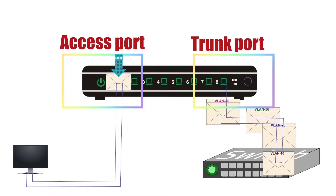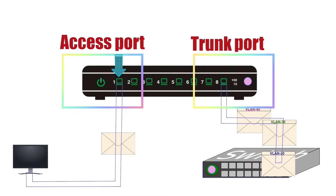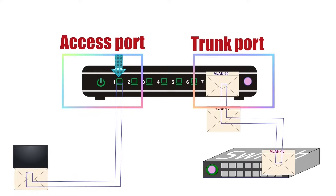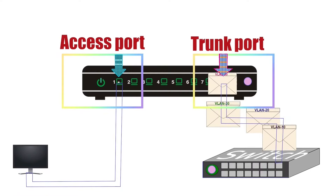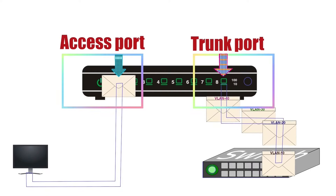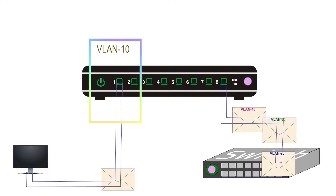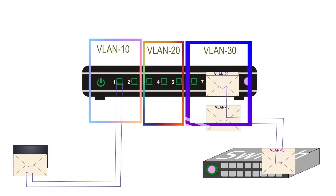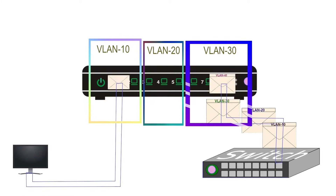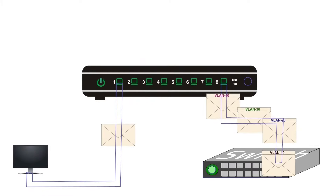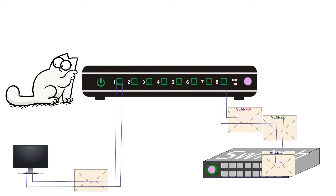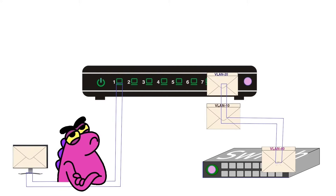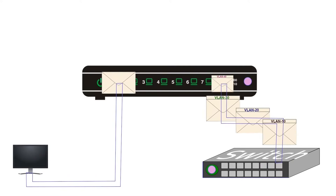If we configure a switch port in access mode, it will be called an access port. If we configure it in trunk mode, it will be known as a trunk port. A switch uses VLAN information to group devices and creates boundaries for broadcast messages. A VLAN is a switch-only feature. End devices do not understand VLAN information.